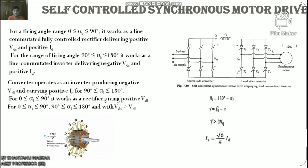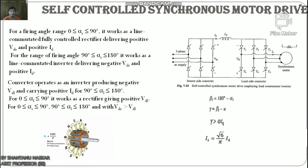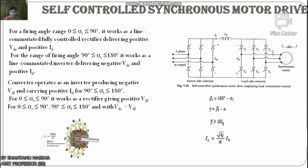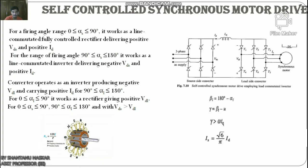For a machine operating in self-control mode, the rotating field speed should be the same as rotor speed. This condition is realized by making the frequency of the load-side converter output voltage equal to the frequency of the induced voltage. Armature firing pulses are therefore generated either by comparison of motor terminal voltage — since induced voltages are not directly accessible — or by rotor position sensors. Self-control is ensured when firing pulses are generated by comparison of motor terminal voltage.